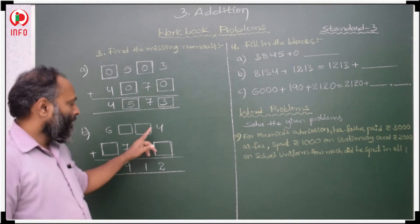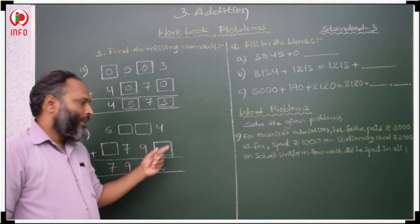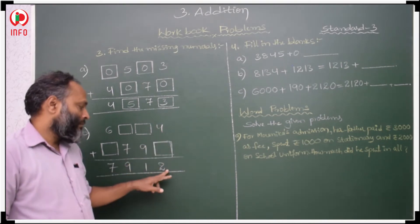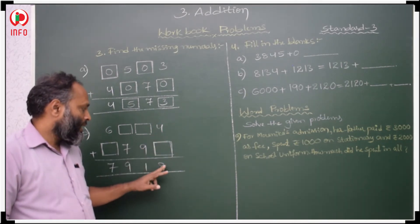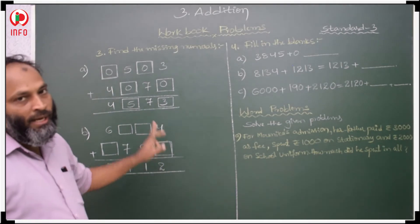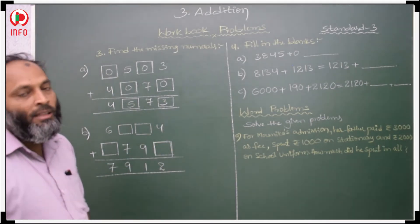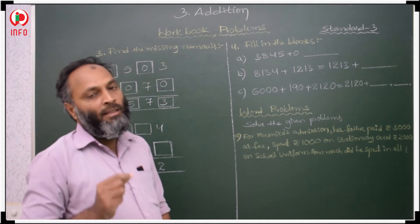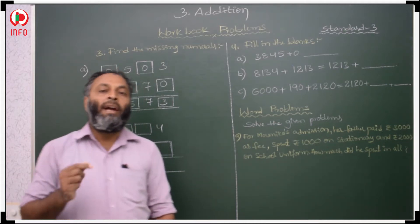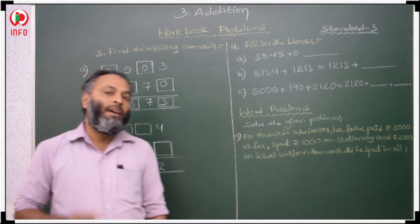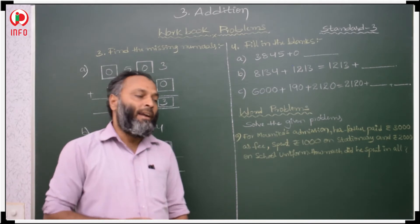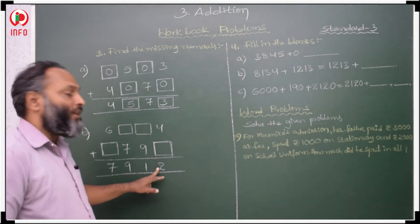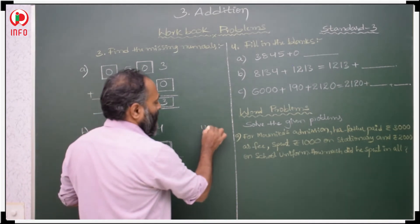Now, this is one of the addends, this is the sum. If you check addend and sum, this is less than the addend — that is not correct. The sum is always greater than the addends. So it is not 2, it is 12.